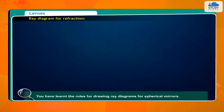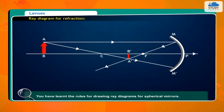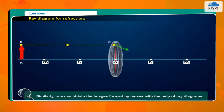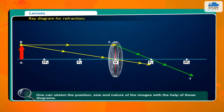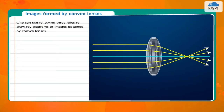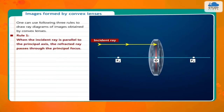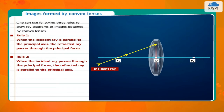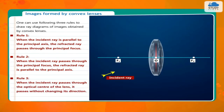You have learned the rules for drawing ray diagrams for spherical mirrors. Similarly, one can obtain the images formed by lenses with the help of ray diagrams, and determine the position, size, and nature of the images. Rule 1: when the incident ray is parallel to the principal axis, the refracted ray passes through the principal focus. Rule 2: when the incident ray passes through the principal focus, the refracted ray is parallel to the principal axis. Rule 3: when the incident ray passes through the optical center of the lens, it passes without changing its direction.